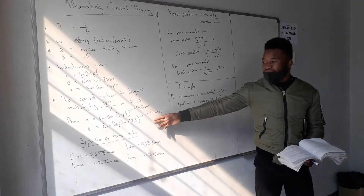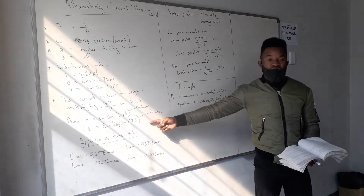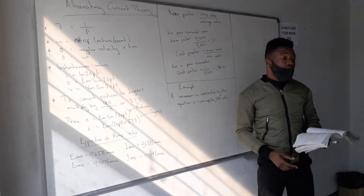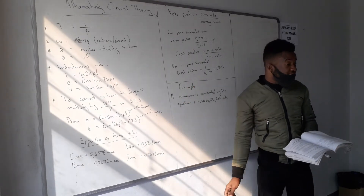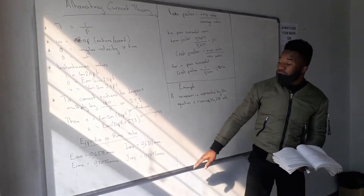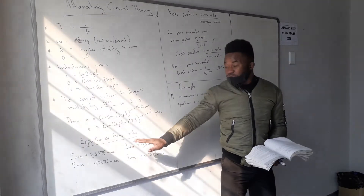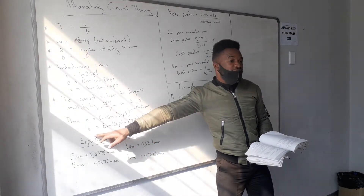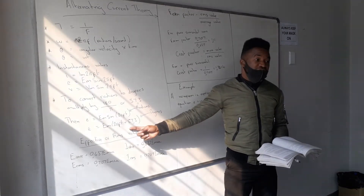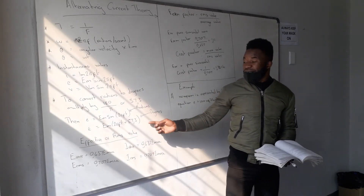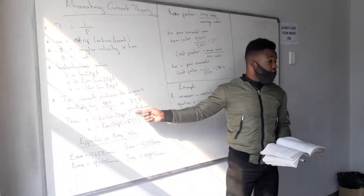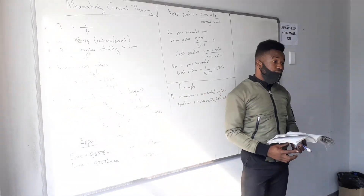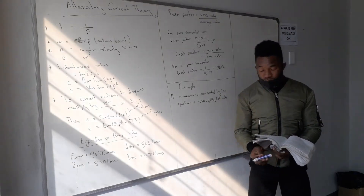This is what was highlighted: once you've converted from radians, you have the angular velocity in degrees. Whenever you're calculating the instantaneous value and given the angular velocity, you must convert by multiplying by 57.3 to get your answer in degrees.